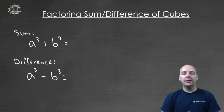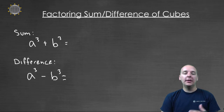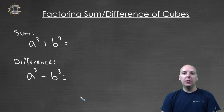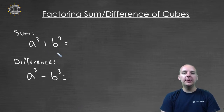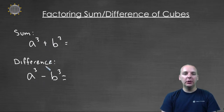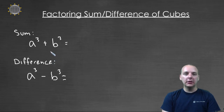Some polynomials are easily factored simply because they look a certain way, and we call these special factoring forms. In this video we're going to take a look at a couple different special factoring forms. If your polynomial fits this template or looks like this, then we can automatically factor it simply because it looks this way.